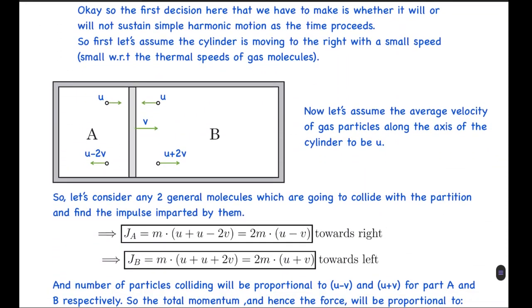The first decision here is whether it will or will not sustain simple harmonic motion as the time proceeds, or basically will the amplitude decrease or remain constant. First let's assume the piston is moving to the right with a small speed, small with respect to the thermal speed of the gas molecules. Here I have assumed the piston is moving to the right with velocity V and the average velocity of gas particles along the axis of the cylinder to be U.